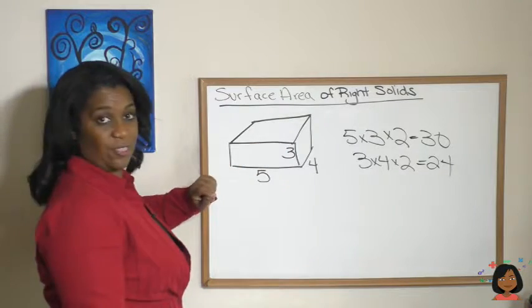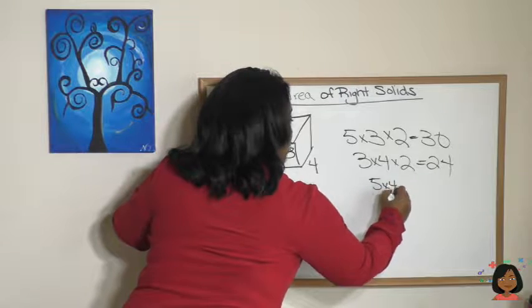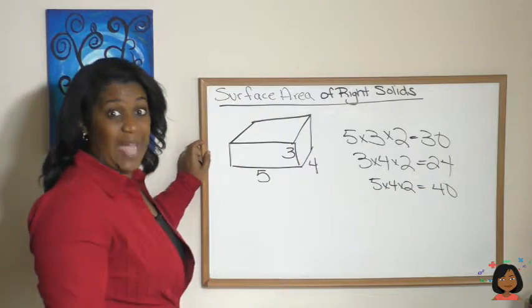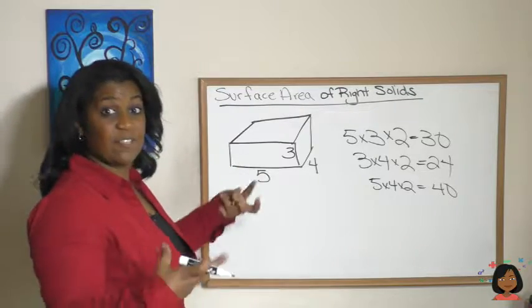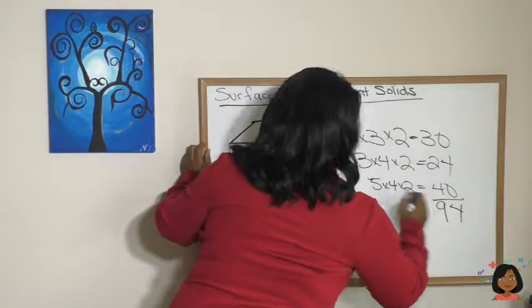And let's do the top and the bottom. We've got five as the length, four as the width. Five times four is 20 times two is 40. Now we've got all of the areas of the surfaces. Let's add them all together. We've got 94.